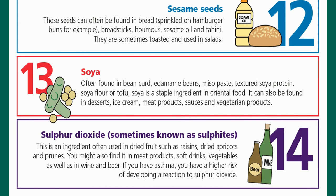(11) Peanuts — actually a legume that grows in the ground — often used in biscuits, cakes, curries, desserts, satay sauce, groundnut oil, and peanut flour. (12) Sesame seeds — found in bread, breadsticks, burger buns, hummus, sesame oil, and tahini. (13) Soya — found in bean curd, edamame beans, miso paste, tofu, soya flour, and is a staple in oriental food, also in desserts and meat products. (14) Sulphur dioxide, or sulphites — used in dried fruits like raisins, dried apricots, and prunes, also in meat products, soft drinks, wine, and beer. Those with asthma have a higher risk of reacting to sulphur dioxide.